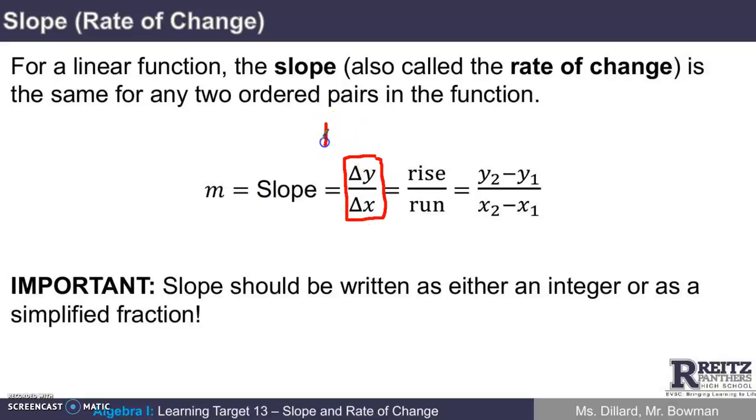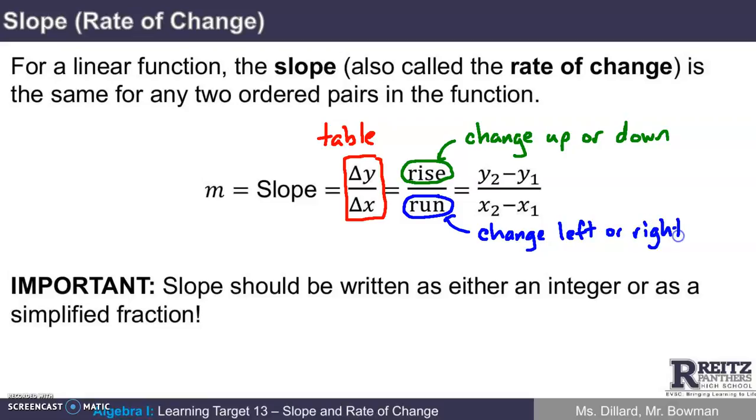So we used this definition here, works really well when you have a table. But the definition we're going to focus on today is the rise over run definition. So for the graph of a linear function, the rise is the amount of change up or down, and the run is the amount of change left or right. So when you hear rise over run, that typically is easy to calculate when you're looking at the graph of a linear function.